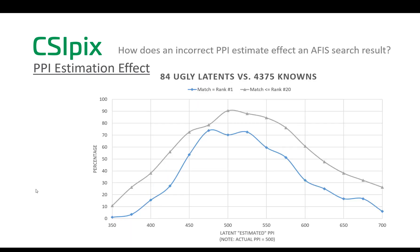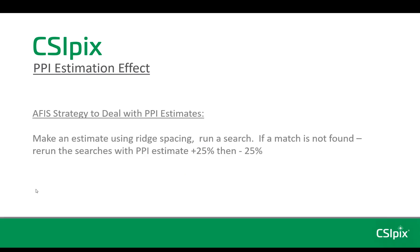This graph shows the results of the APHIS searches I ran using the 84 ugly latents from the NIST27 database. The same kind of results we saw with the goods and the bads — this asymmetrical drop-off where it's worse to underestimate the resolution. Since detection of the actual match drops off so much, I wanted to come up with a strategy to help you be able to find the match, if it is in the database, when you have to estimate a PPI.